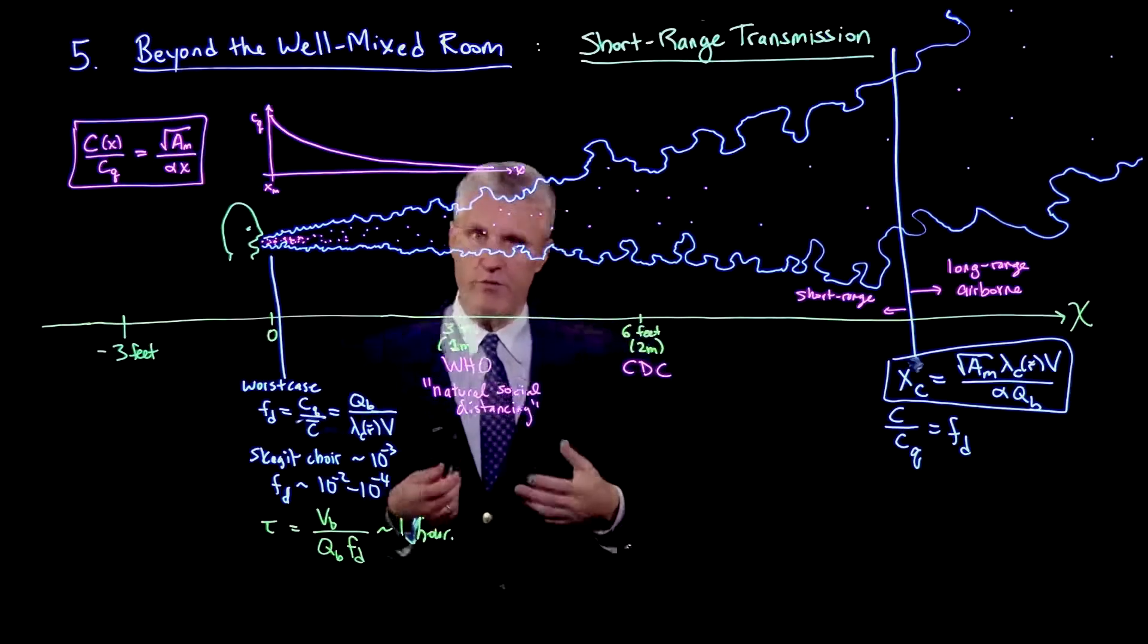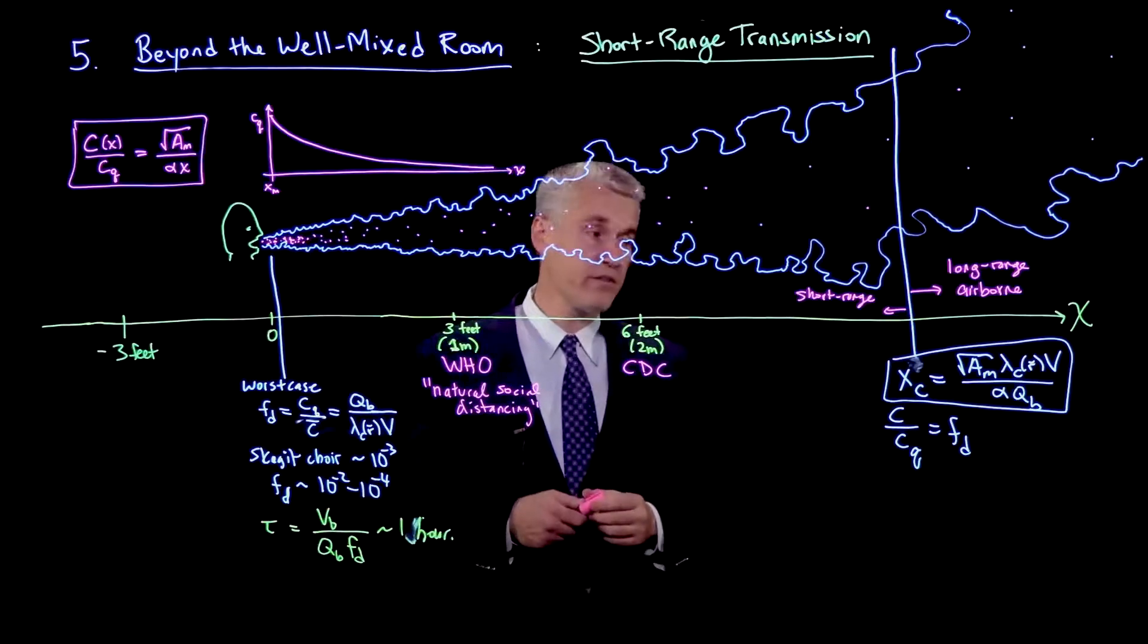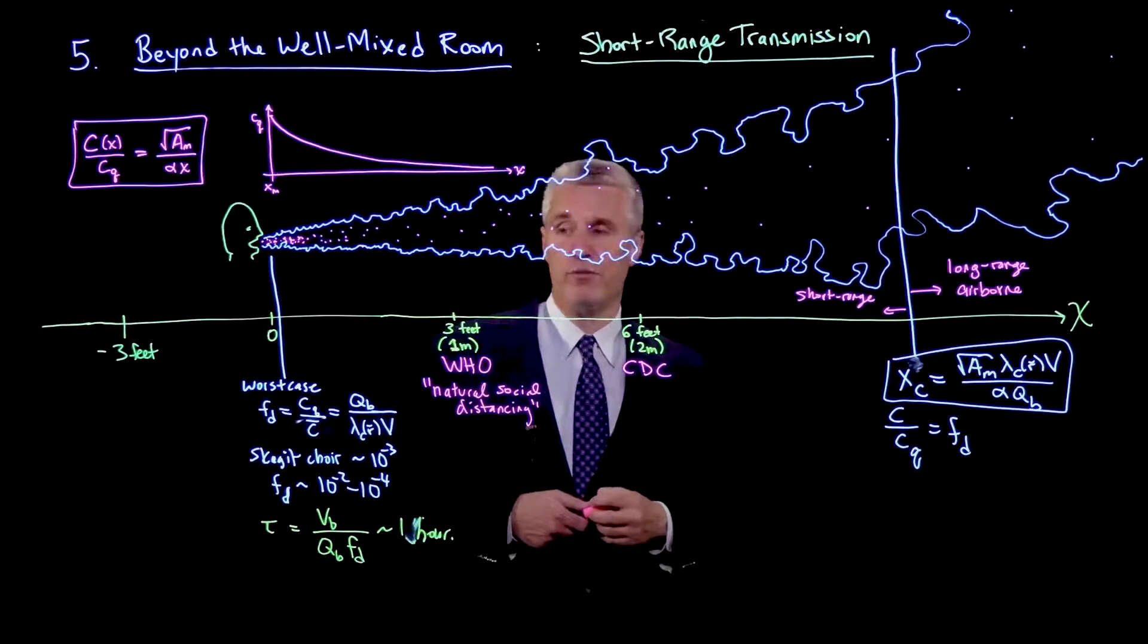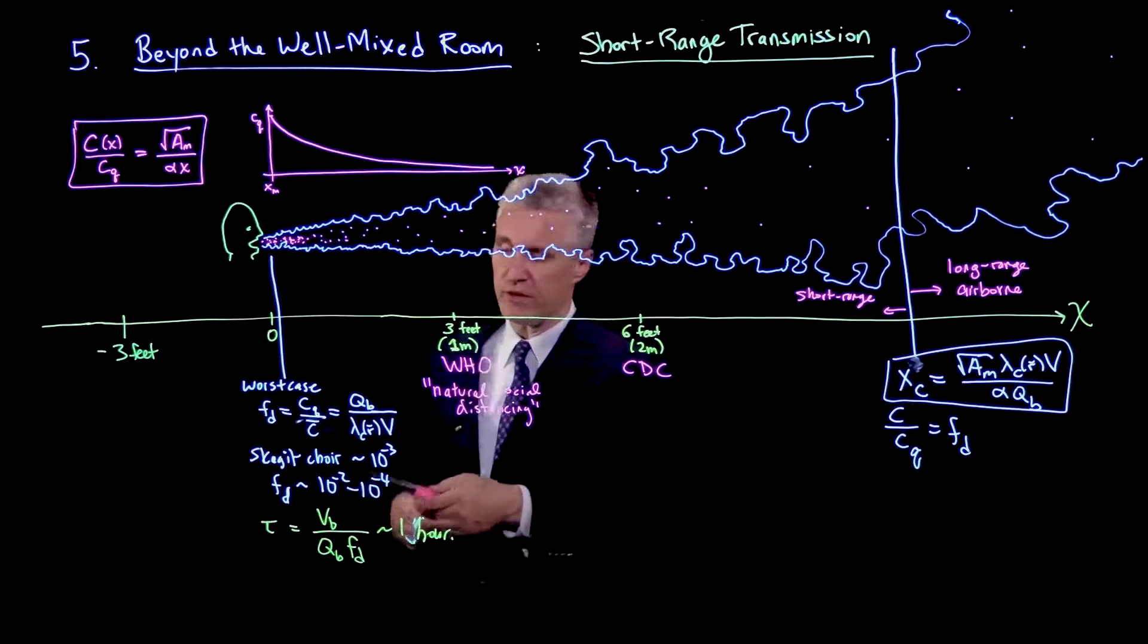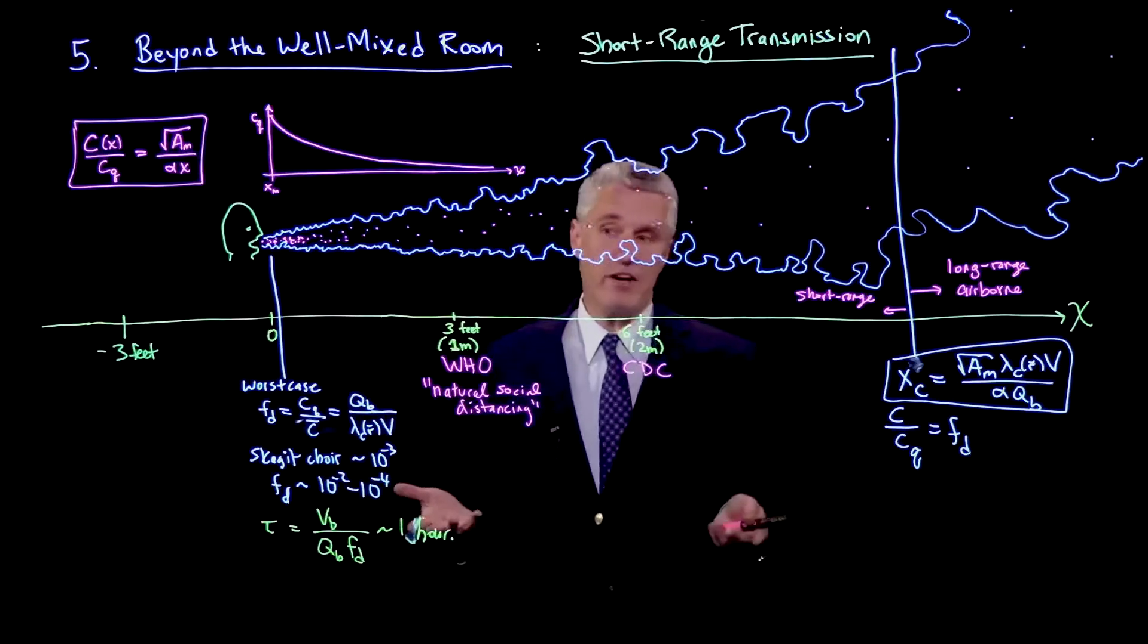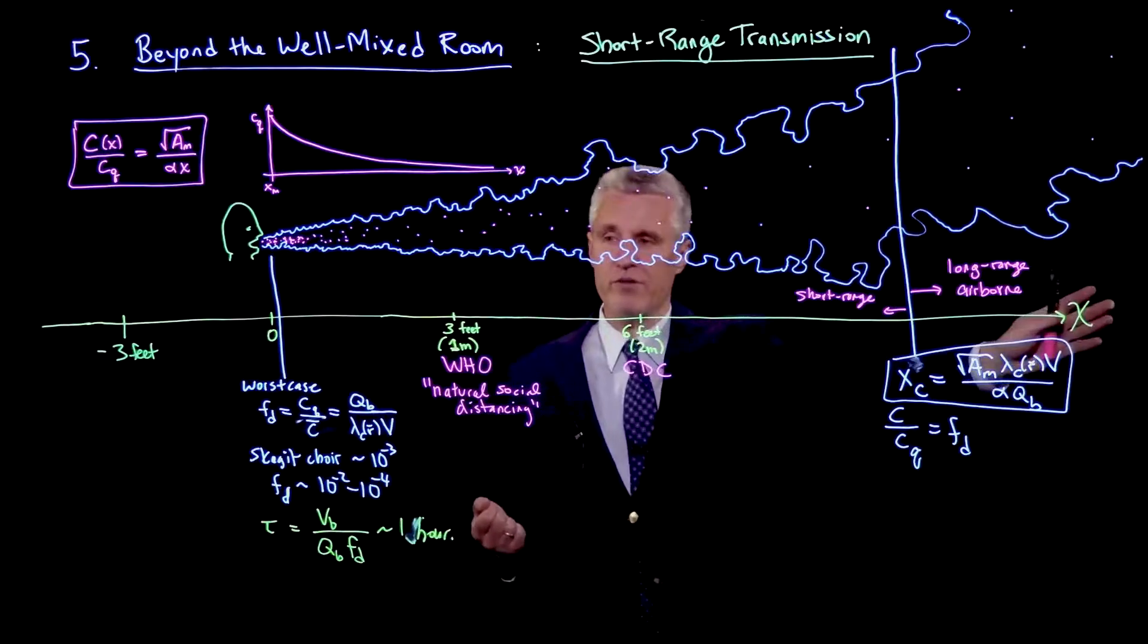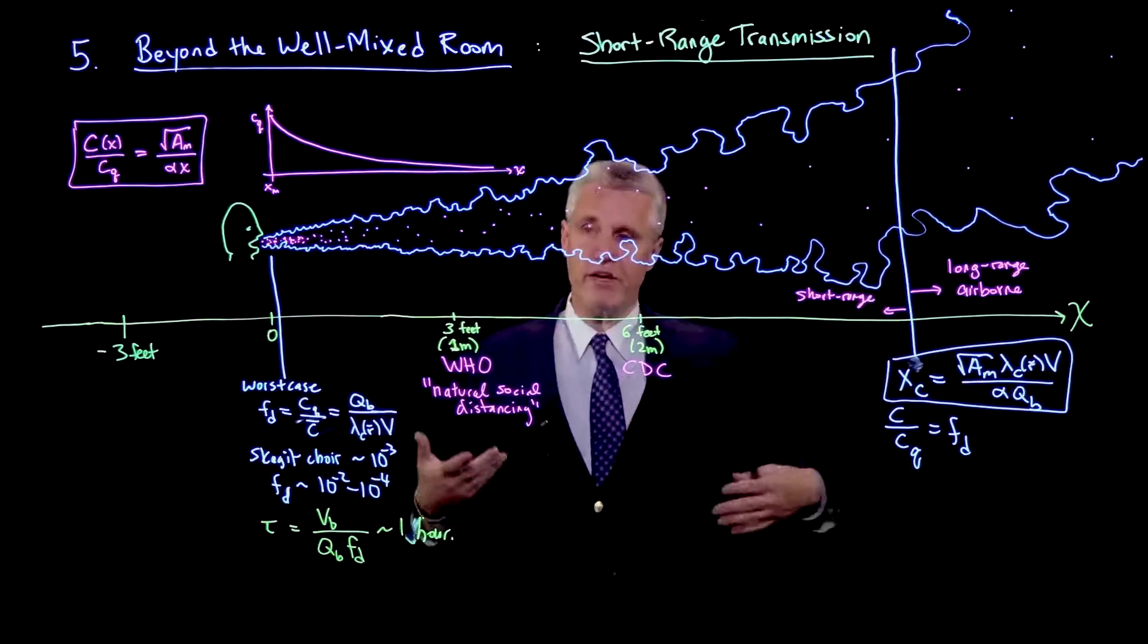Some aerosol droplets you could be inhaling anywhere close by, but if you go long-range, you're only talking about aerosol droplets. This is really where the dividing line is. If you plug in numbers for different settings, you'll find xc is often larger than 6 feet. In many cases, it's actually larger than the room, could be tens of meters even.